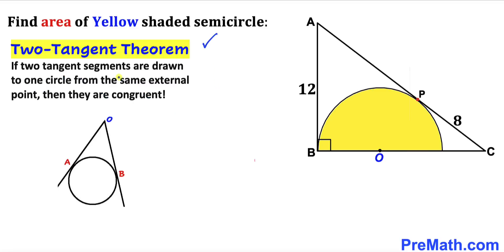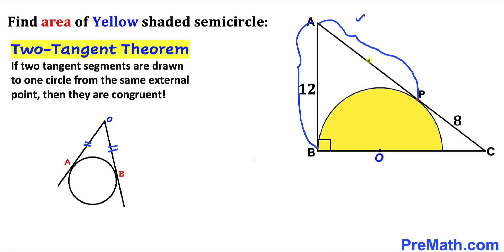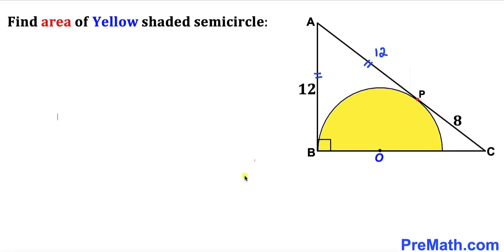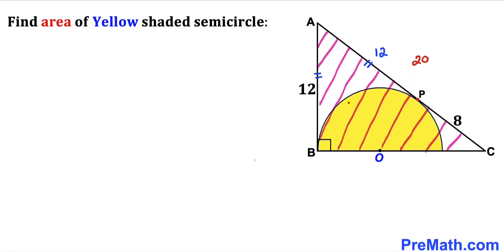Let's recall the two-tangent theorem. According to this theorem, if two tangent segments are drawn to one circle from the same external point, they are congruent. In our case, line segment AB equals line segment AP, so AP is also 12 units. Therefore, the whole side length AC is 12 plus 8, which equals 20 units.